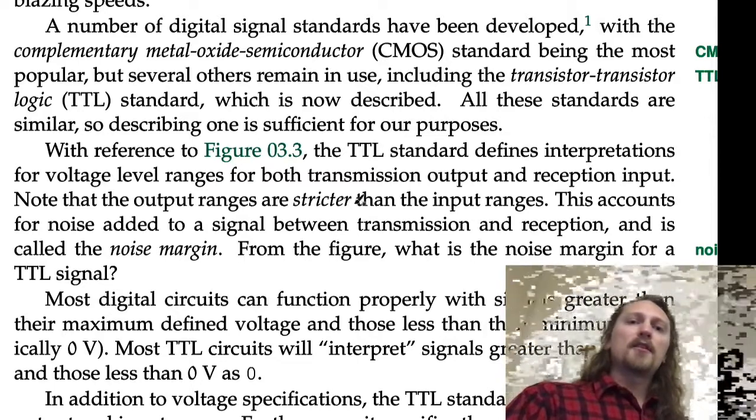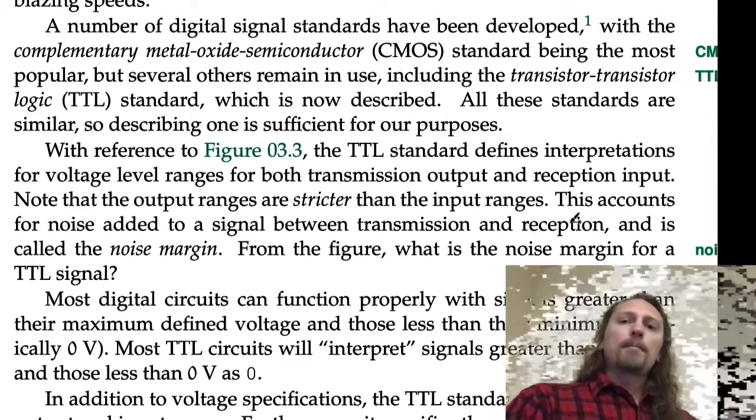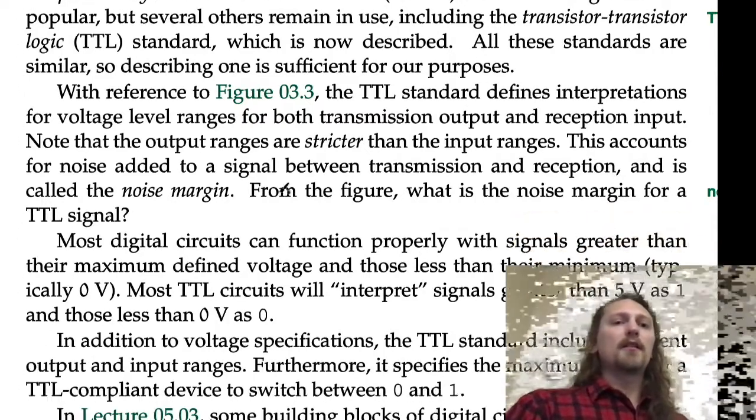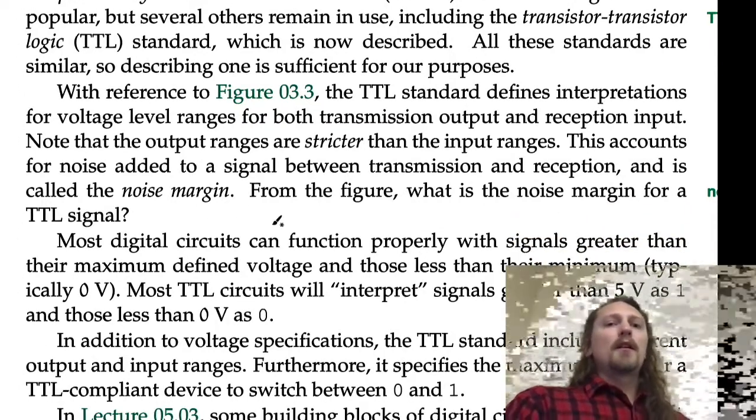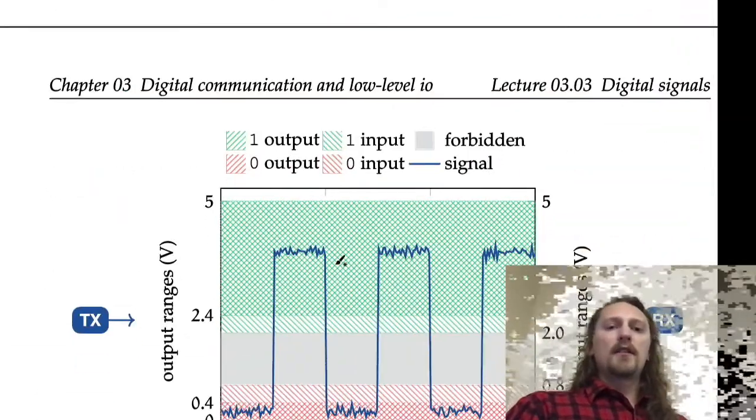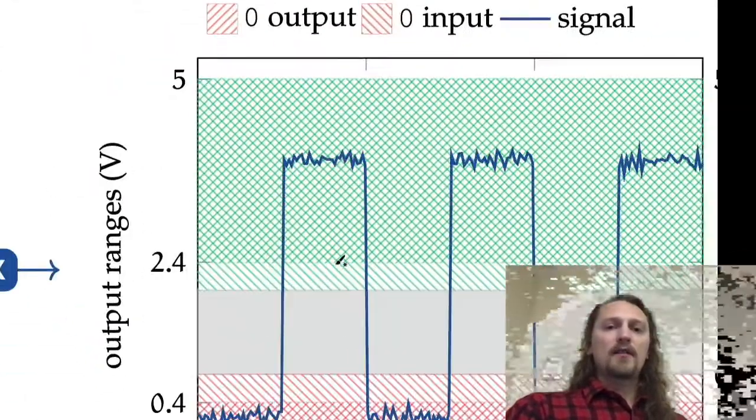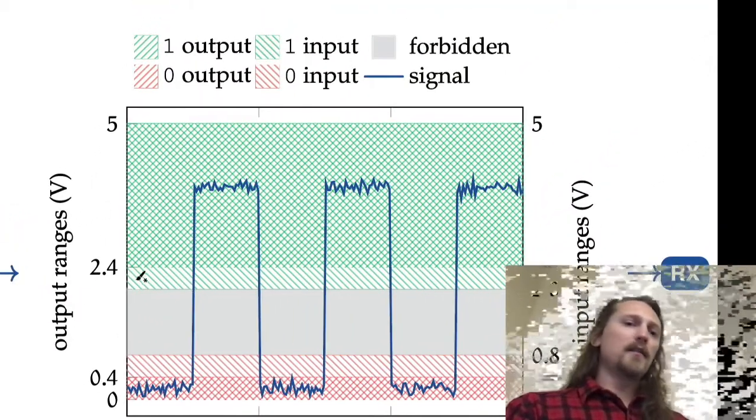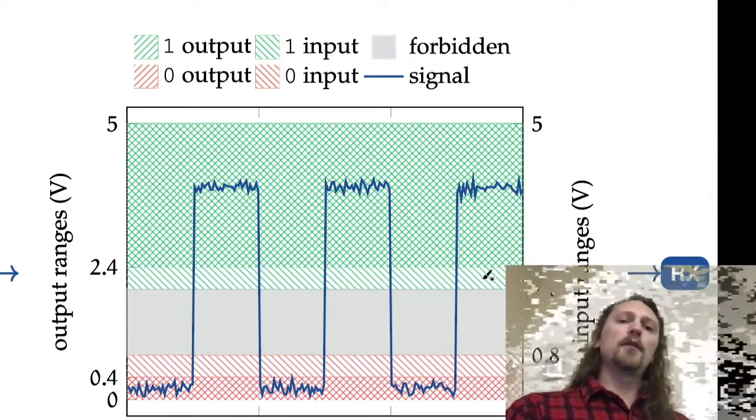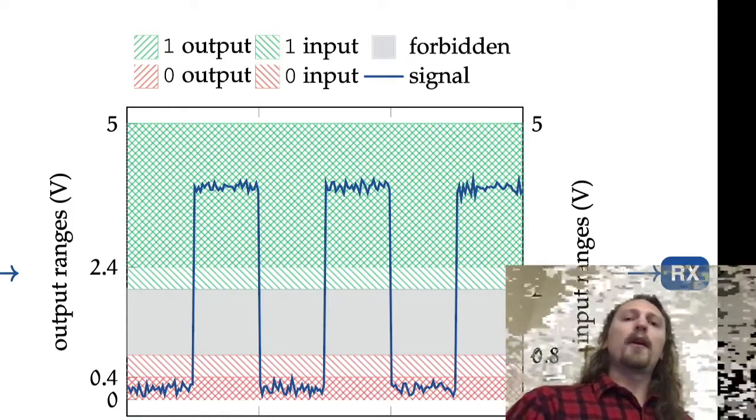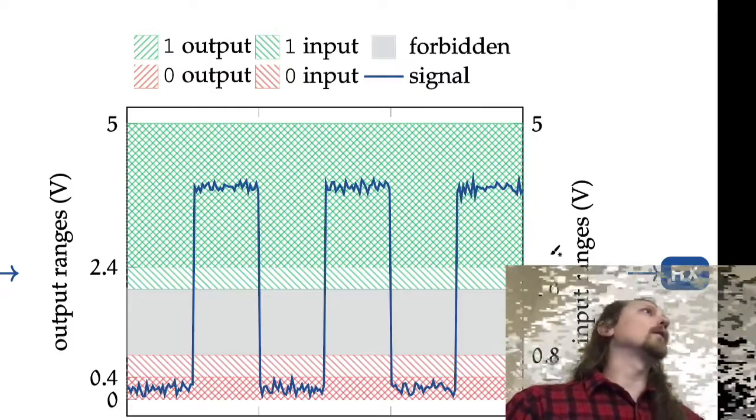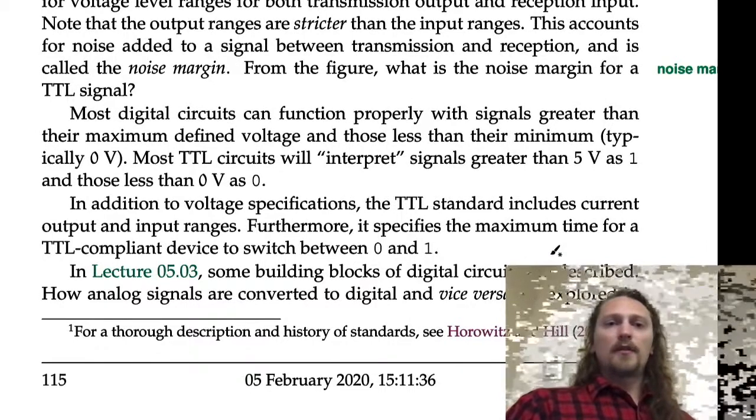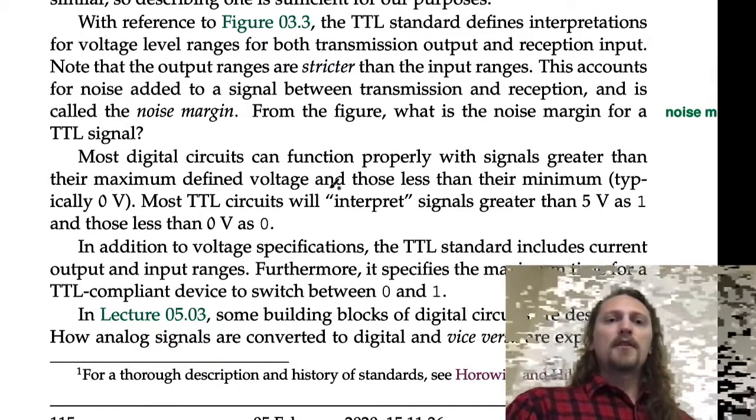So the output ranges are stricter than the input ranges. This accounts for noise added to a signal between transmission and reception, and it's called the noise margin. So from the figure, what is the noise margin in this case? 0.4 volts, right. We've got 2.4 went down to 2 on the input, 0.4 went up to 0.8, so we have a 0.4 noise margin. So for TTL, that's what the noise margin is.